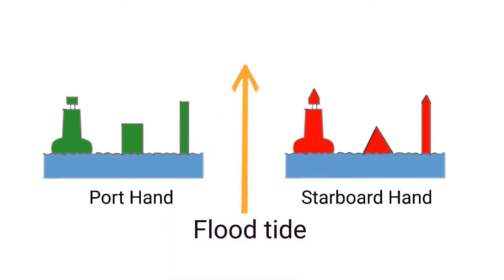You can also notice that the starboard hand beacons have pointed tops, and the port hand beacons have flat tops. That is always the case, so even if you were red-green color blind, you can still distinguish between starboard hand and port hand beacons. It doesn't matter if you're looking at buoys, cans, or spars — their top shapes always follow this pattern. These buoys may have top lights to make them visible at night, which I'll describe in the next lesson.